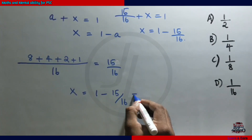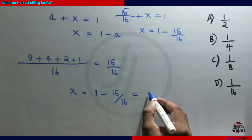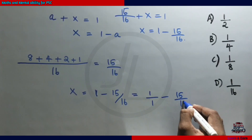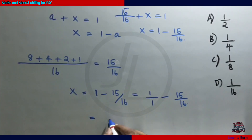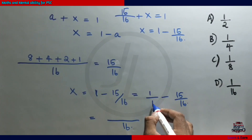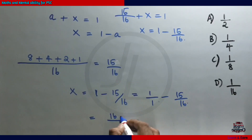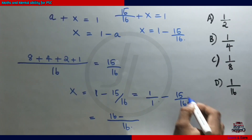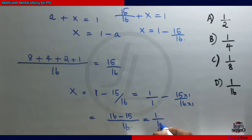How can we bring it down? X equals 1 minus 15 by 16. Let's do this — we have two different denominators. We have 16. We will multiply: 1 is equal to 1 by 1, this is minus 15 by 16. We multiply 16 by 16. So one times 16 equals 16, and the answer is 1 by 16.